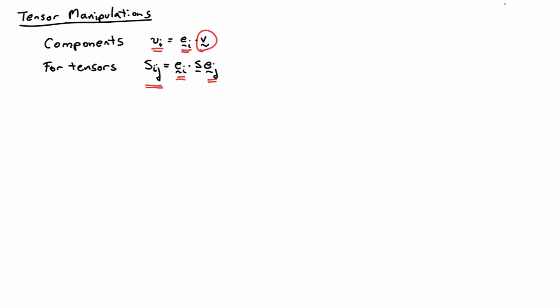Just as we have for vectors — if we have the components, we can express the vector itself by summing against the basis vector: V1E1 plus V2E2 plus V3E3. There's a similar expression for tensors: S is equal to Sij EI outer product EJ. Notice that there's a double sum here, a sum on I and a sum on J.